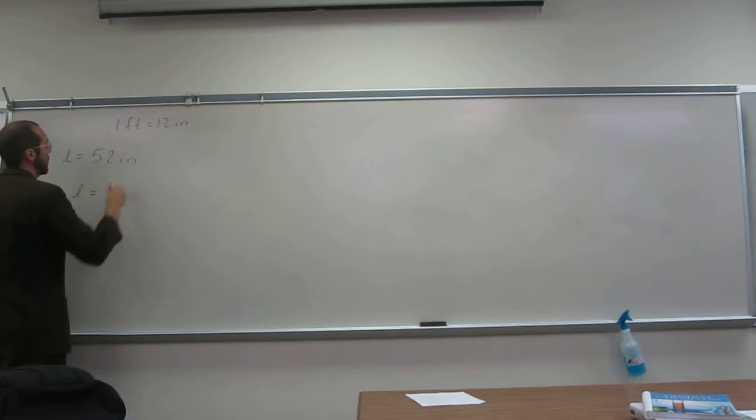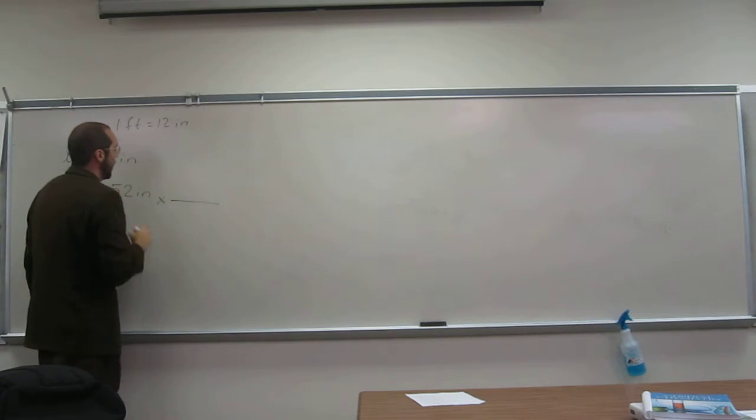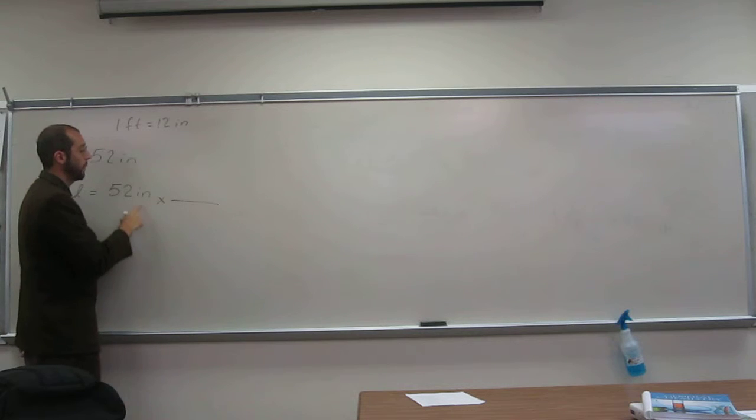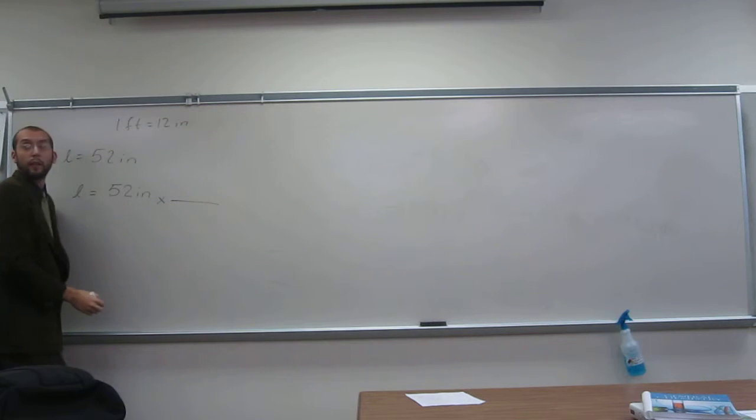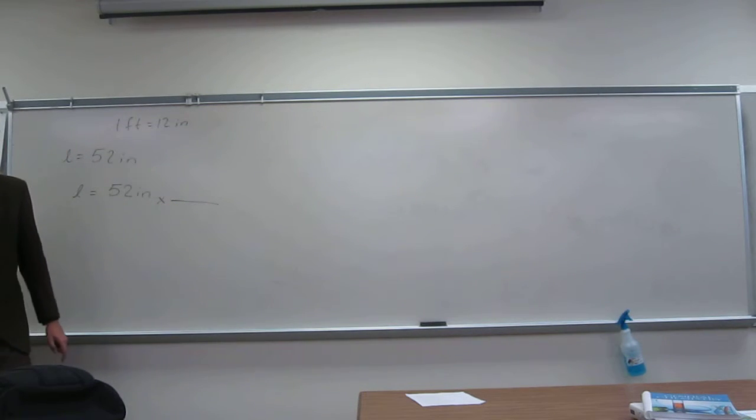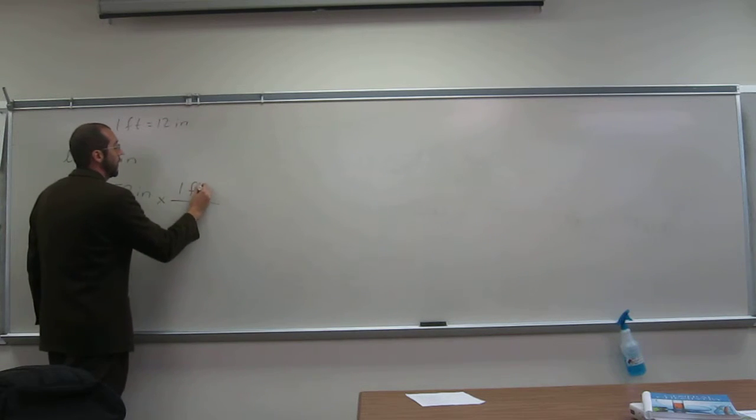We have this conversion factor. All we have to do is take 52 inches and multiply that by that conversion factor, but we want to divide out the inches and keep feet in there. So one foot for 12 inches. We've got to put one over the other, and the way to do that is to put one foot on top and 12 inches on the bottom.